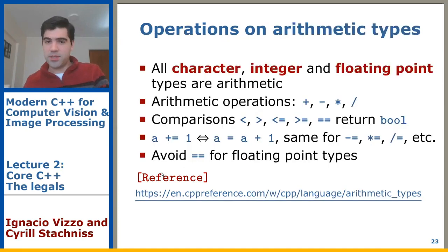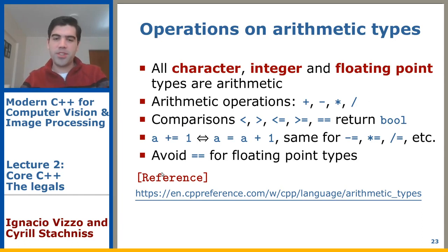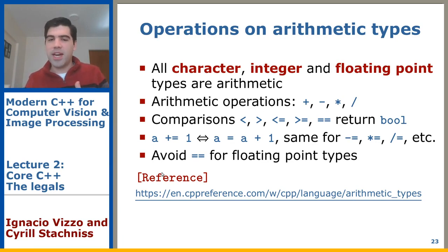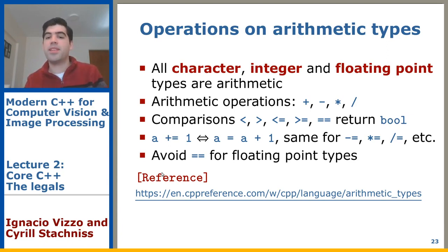There are many operations you can do on arithmetic types. If you want to see which operators are available, go back in the slides to the operators table. You can do arithmetic operations, comparisons, and increment operations. The arithmetic types include characters, integers, and floating point values — short, long, double, unsigned, and all the core language types. You can use all arithmetic operations with these types.